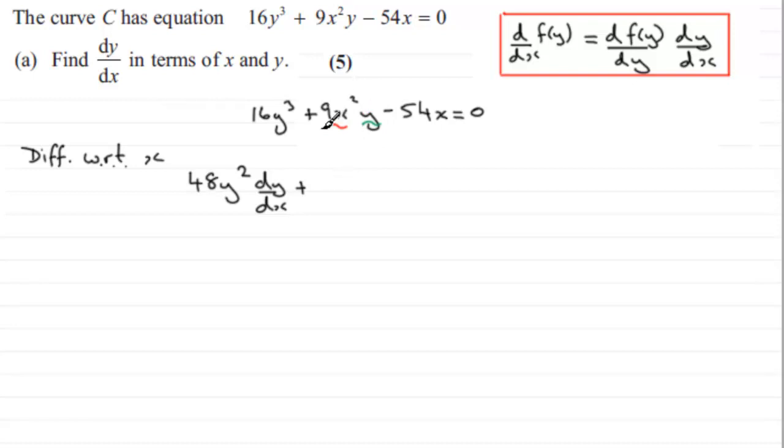So we take one part, let's say 9x², and we multiply it by the differential of the other part, which in this case is y. Differentiating y with respect to x is simply dy/dx. If we took it literally like this, we would differentiate the y, get 1, and then multiply it by dy/dx, but nonetheless, it's dy/dx.